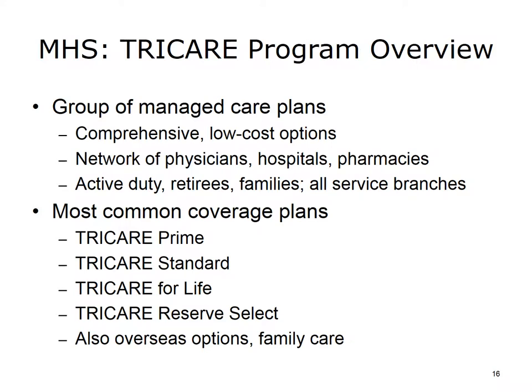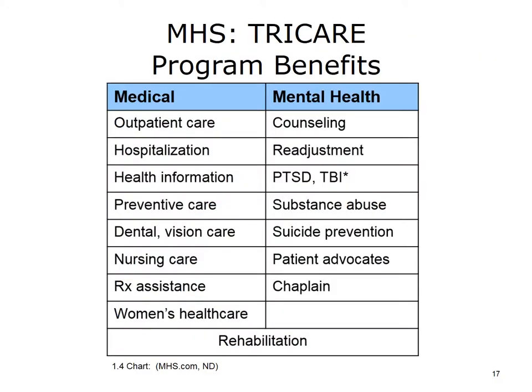Service members may choose from nine TRICARE plans. The most commonly selected plans include TRICARE Prime, a health maintenance organization and the most affordable option; TRICARE Standard, the most flexible option; TRICARE for Life, available to retirees receiving Medicare benefits as secondary health care coverage; and TRICARE Reserve Select, available for a monthly premium to eligible National Guard and Reserve members. Other TRICARE plans are targeted at veterans posted outside the U.S., and there is also a family plan as part of TRICARE Prime. Some of the plans require that the veteran assume some of the costs.